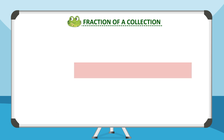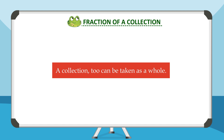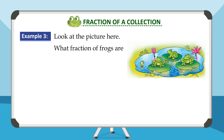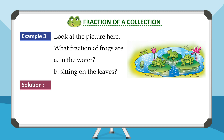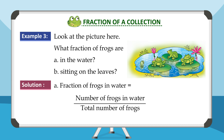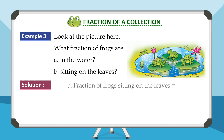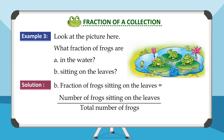Fraction of a collection: A collection too can be taken as a whole. Example three: Look at the picture. What fraction of frogs are — A: in the water, B: sitting on the leaves? Solution A: Fraction of frogs in water equals number of frogs in water upon total number of frogs, which is equal to one upon four. Thus, one-fourth of the frogs are in water. B: Fraction of frogs sitting on the leaves equals number of frogs sitting on the leaves upon total number of frogs.